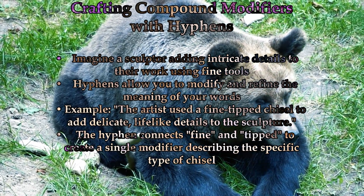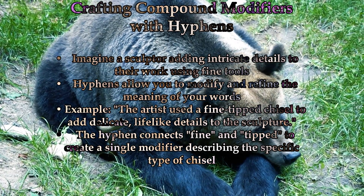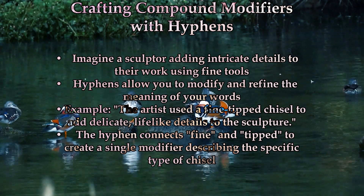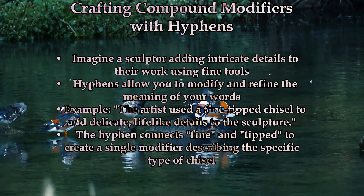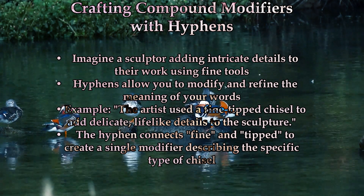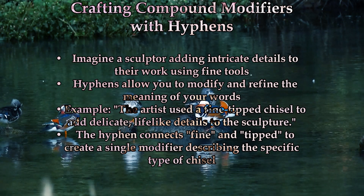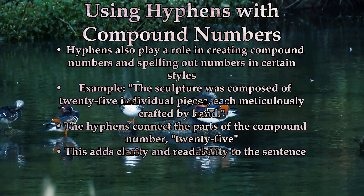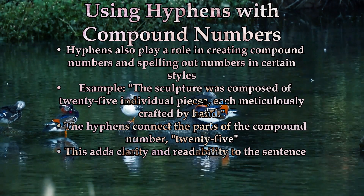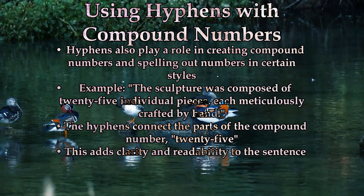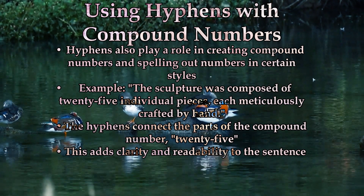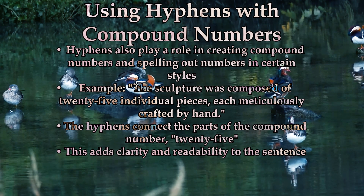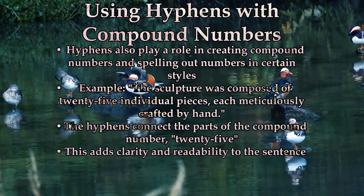For example, consider the sentence: 'The artist used a fine-tipped chisel to add delicate, lifelike details to the sculpture.' The hyphen connects 'fine' and 'tipped' to create a single modifier describing the specific type of chisel used. Hyphens also play a role in creating compound numbers. For instance: 'The sculpture was composed of twenty-five individual pieces, each meticulously crafted by hand.' The hyphens connect the parts of the compound number twenty-five, adding clarity and readability.